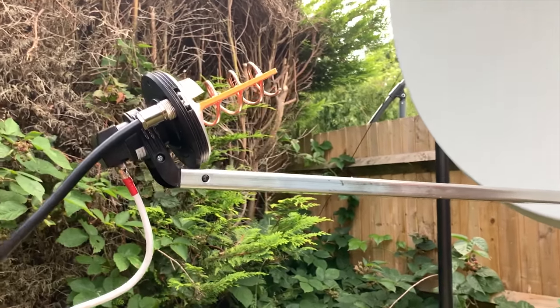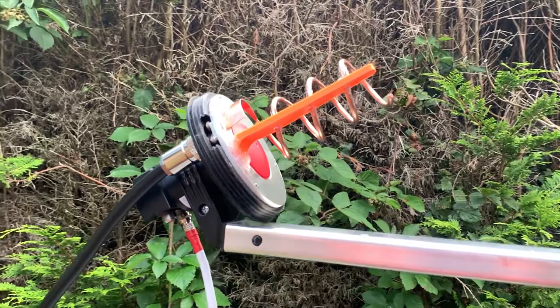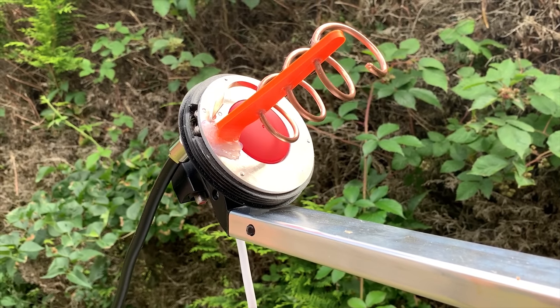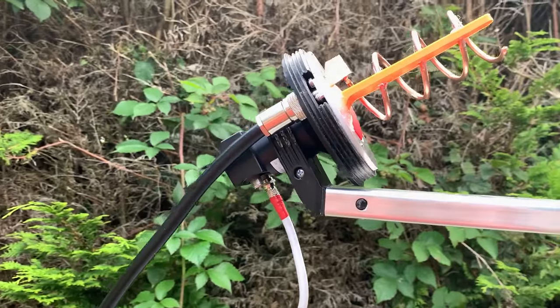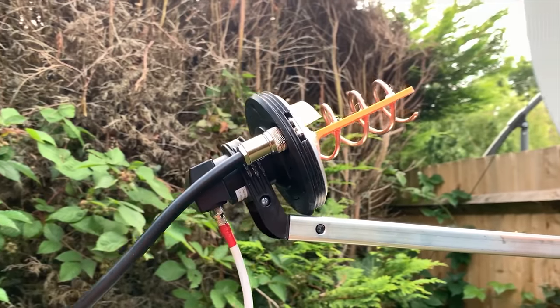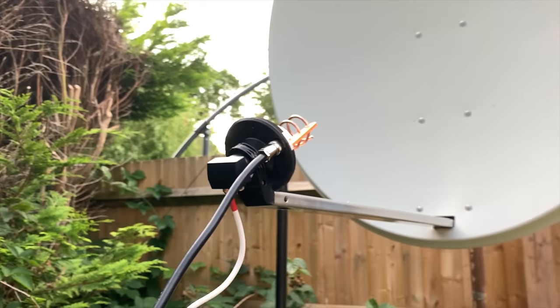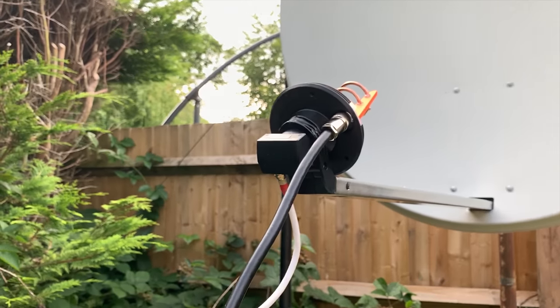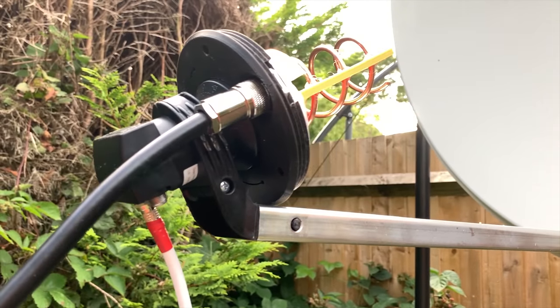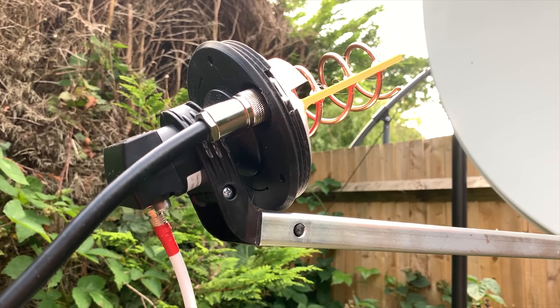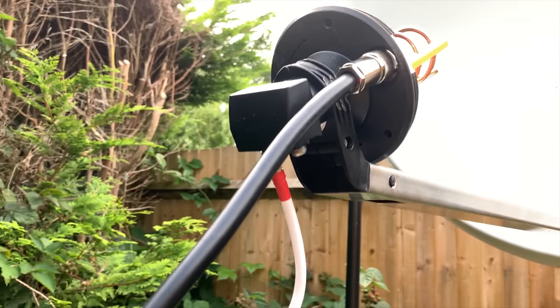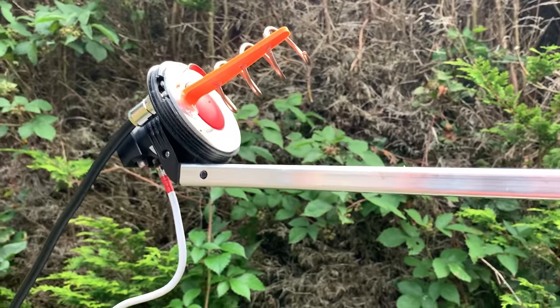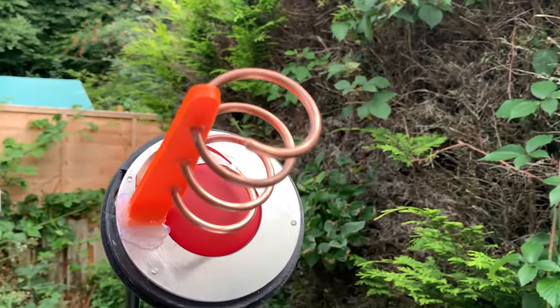So this is the helix and LNB combo attached to the dish arm. The thick black cable that you can see there, that's feeding the helix with the 2.4 gigahertz signal. And the cable is around 1.5 meters long, and it's called Formula Zero, which is an extremely low loss coax. The white cable that you can see there is 75 ohm coax, and that's connected to the green output port of the Bullseye LNB. And this feeds directly into the receive side of the Pluto going through a bias T and a 20 dB attenuator.